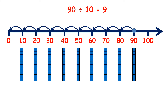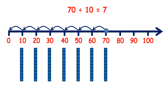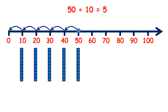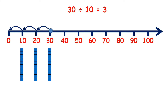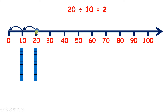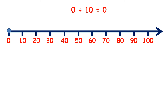90 divided by 10 is 9. 80 divided by 10 is 8. 70 divided by 10 is 7. 60 divided by 10 is 6. 50 divided by 10 is 5. 40 divided by 10 is 4. 30 divided by 10 is 3, because if we have 30, we can take away 10 three times to get to 0. 20 divided by 10 is 2, because if we have 20, we can take away 10 two times to get to 0. 10 divided by 10 is 1. And 0 divided by 10 is 0.